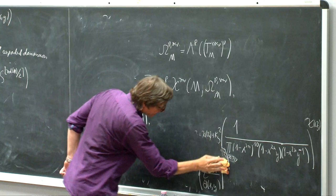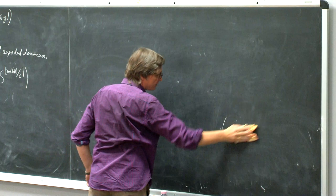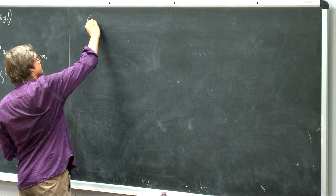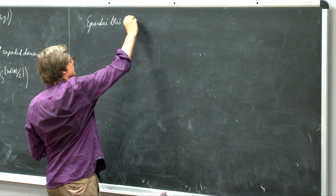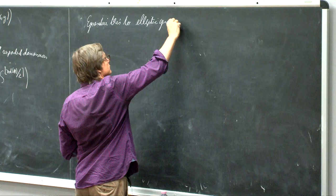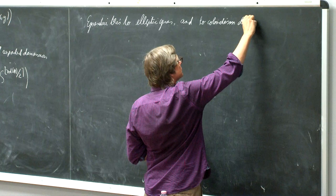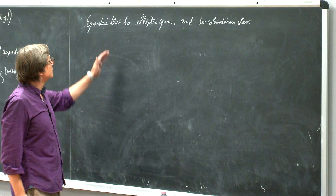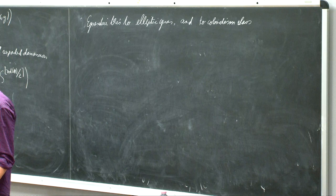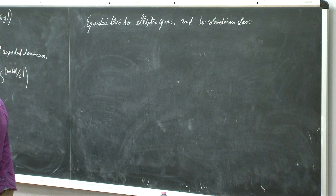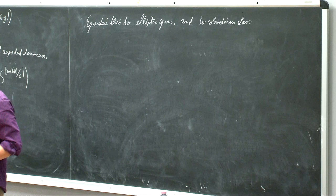There are also further generalizations which I will not speak about now. One can also generalize this to the elliptic genus and to some extent to the Cobordism class. There is a formula for the elliptic genus which is very similar to the Dijkgraaf-Moore-Verlinde-Verlinde formula for the elliptic genus for Hilbert schemes of points on the K3 surface, but it's a bit complicated to write, so I will maybe not do that.